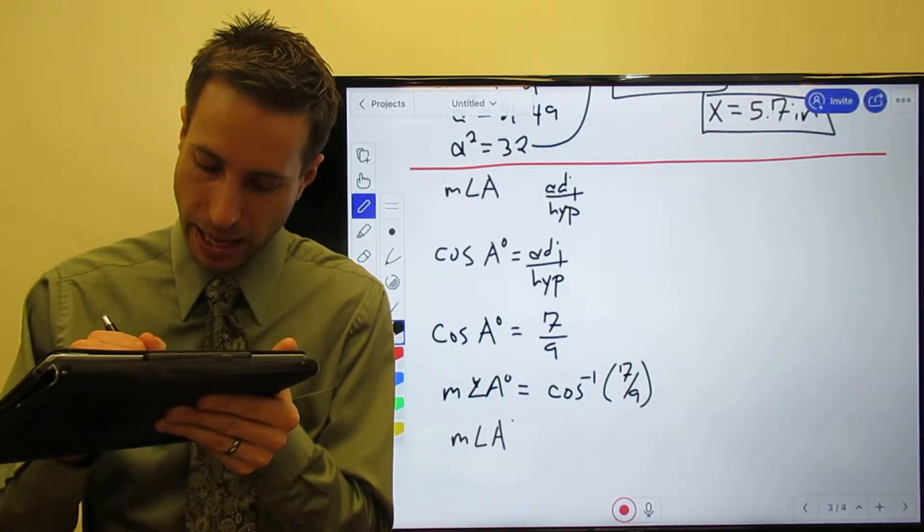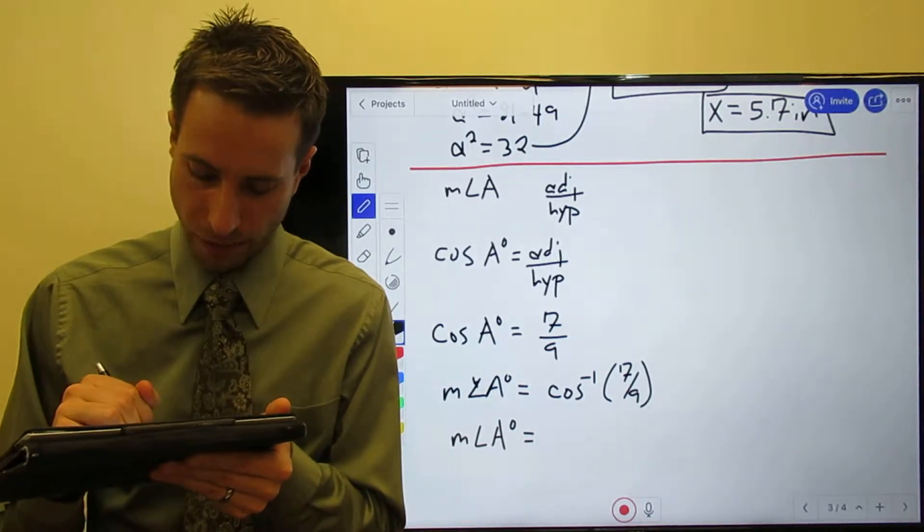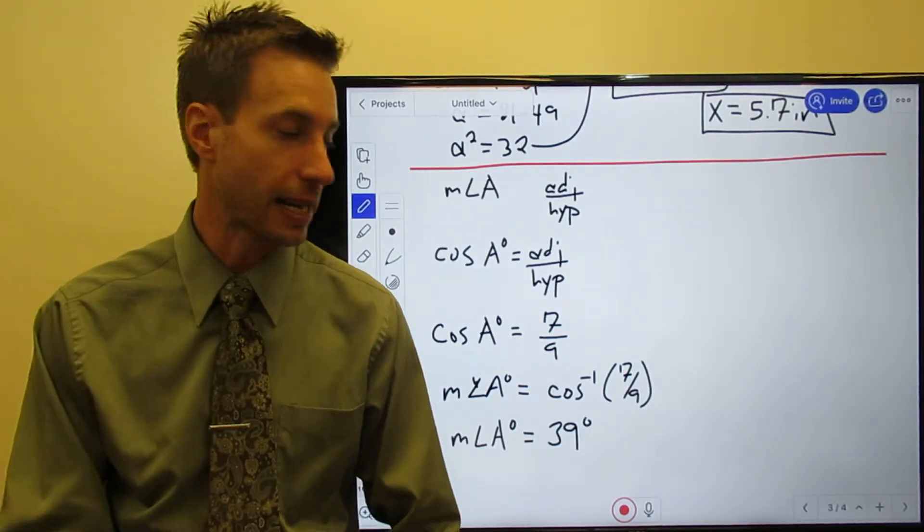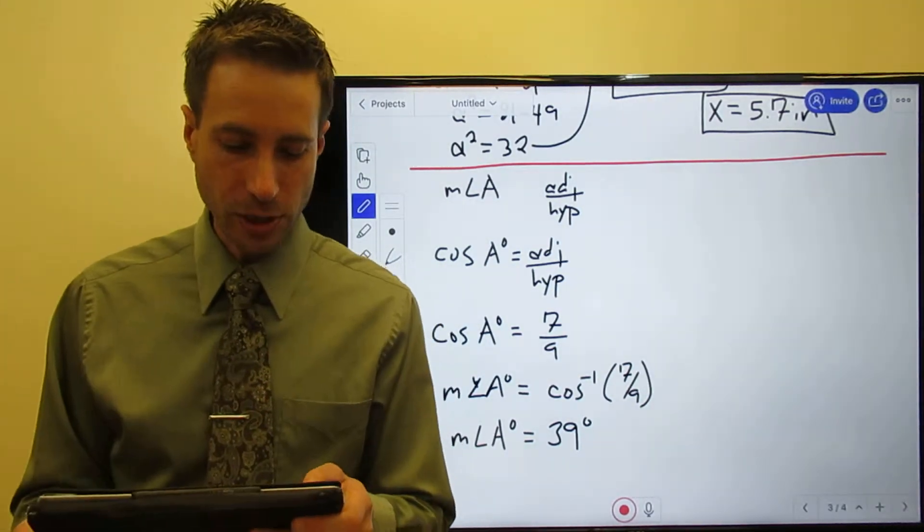This is a calculator problem. You'll take the inverse cosine of 7/9 and you wind up with the measure of angle A being equal to 39 degrees. The measure of angle A is 39 degrees.